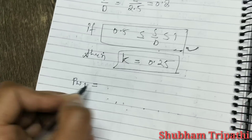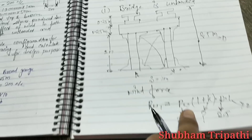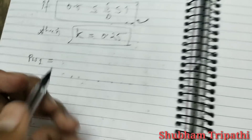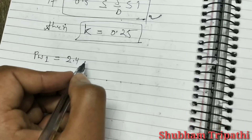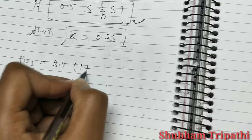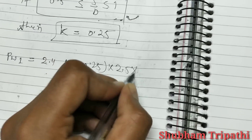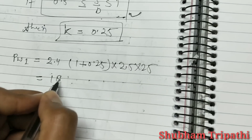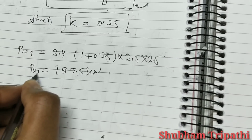Now putting all values: pw1 = pw × (1 + k) × d × l = 2.4 × (1 + 0.25) × 2.5 × 25 = 187.5 kN. So pw1 = 187.5 kN for the unloaded condition.